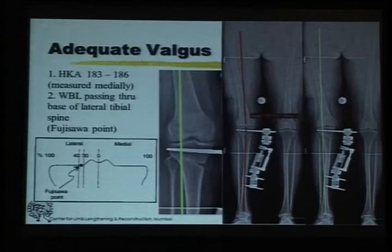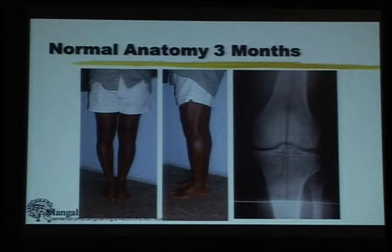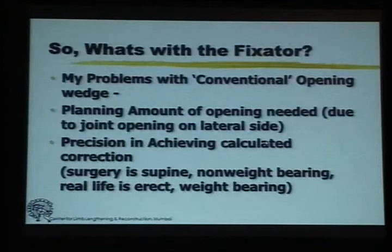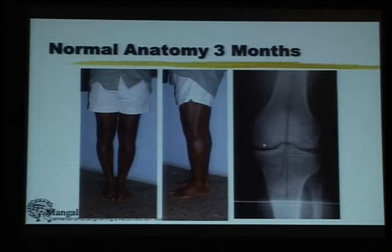At the end of three months, once the bone is healed — because this was gradual distraction, the regenerate forms and solidifies — you take off the fixator, and you have a proximal tibia which looks as normal as can be. If you had not seen the earlier x-rays where the osteotomy was done, not many would be able to say that there is anything really abnormal with this proximal tibia.